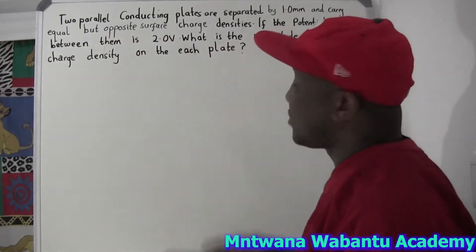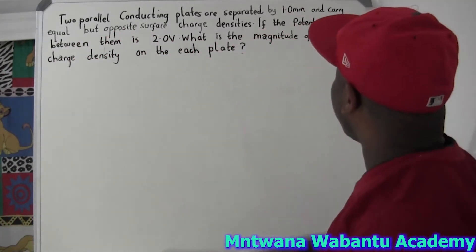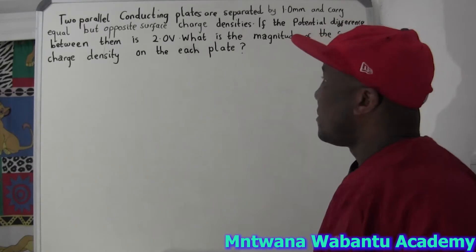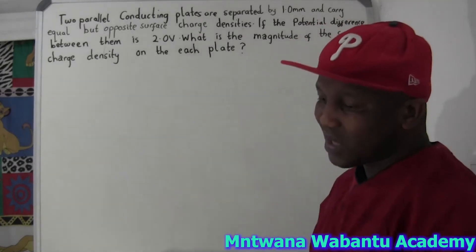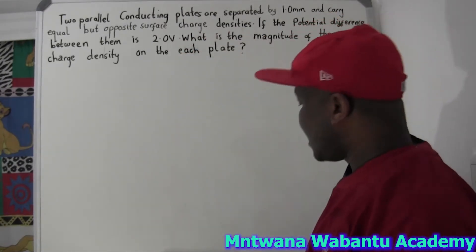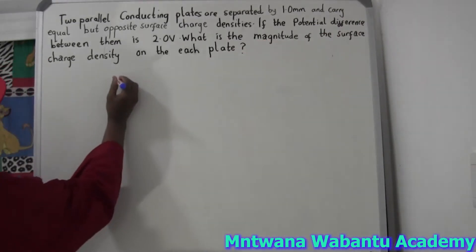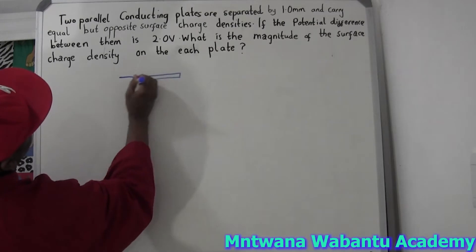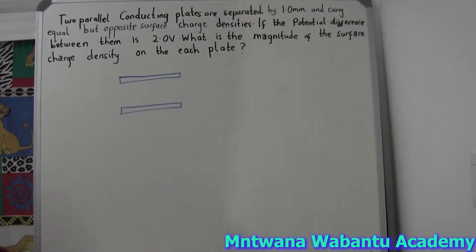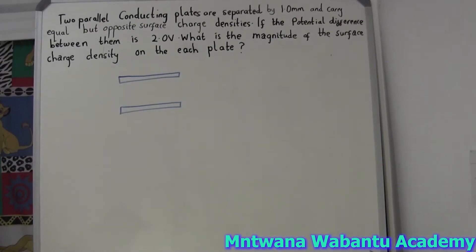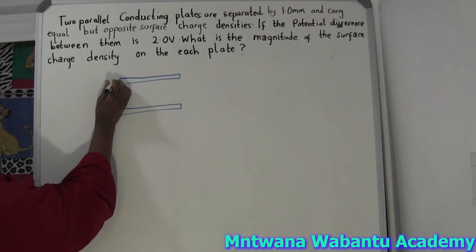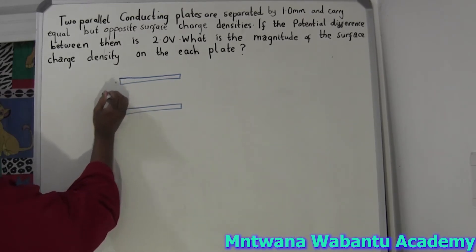Without further ado, let's get started. So they say two parallel conducting plates, and these are separated by 1.0 millimeter, and they carry equal but opposite surface charges — meaning one is positive and one is negative. If the potential difference between them is 2 volts, let's say you have two plates here.